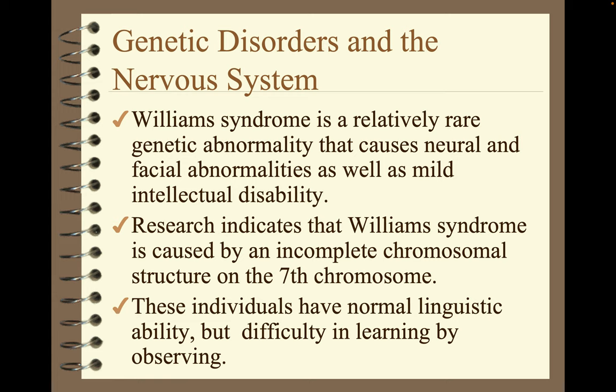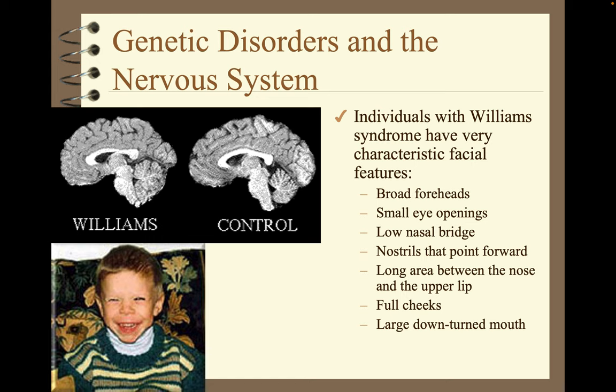Williams syndrome is a relatively rare genetic abnormality that causes neural and facial abnormalities as well as mild intellectual disability. Research indicates it is caused by an incomplete chromosomal structure on the seventh chromosome. These individuals have normal linguistic ability but difficulty in learning by observing. Individuals with Williams syndrome have very characteristic facial features: broad foreheads, small eye openings, low nasal bridge, nostrils that point forward, a long area between the nose and upper lip, full cheeks, and a large downturned mouth. The brain scan comparison shows the cerebellum is much larger and the occipital lobe is much smaller in individuals with Williams syndrome.